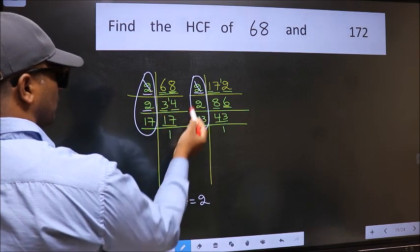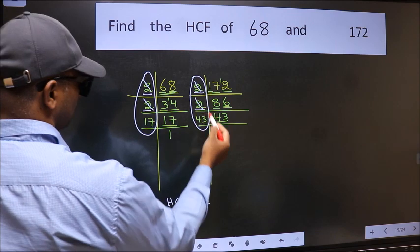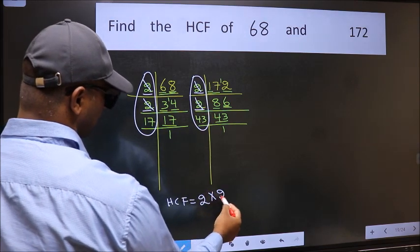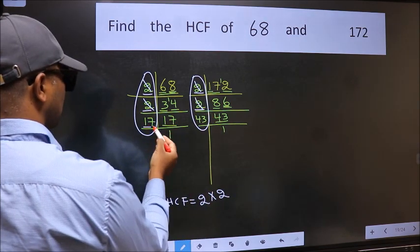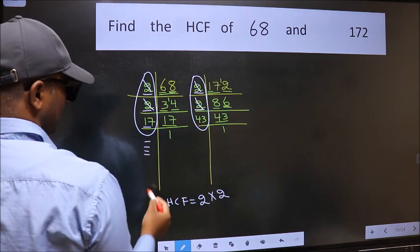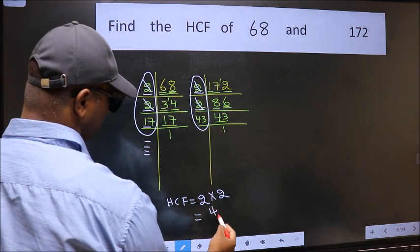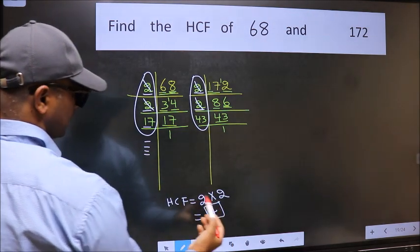Next number 17. Do we have 17 here? No. No more numbers are left out. So our HCF is 2 into 2, 4 is our HCF.